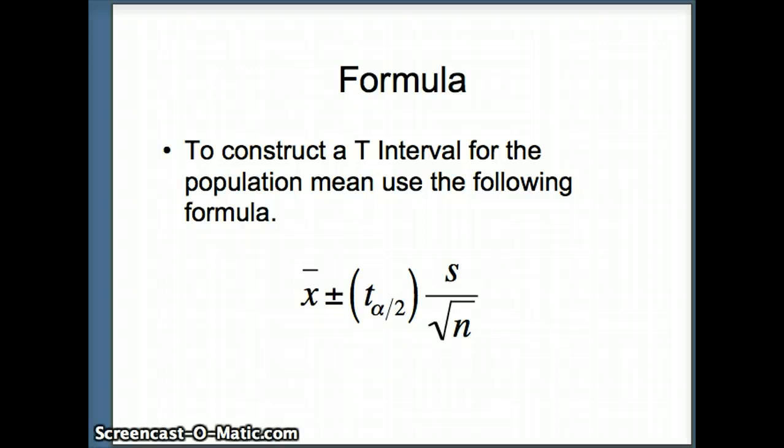So our goal is to construct a confidence interval for the population mean, or mu, and we're going to use this formula to find that. x-bar plus or minus t alpha by 2 times s over root n. And finding x-bar s and n is easy. It just requires us to find descriptive statistics. Finding t alpha by 2 will take a little bit more work.